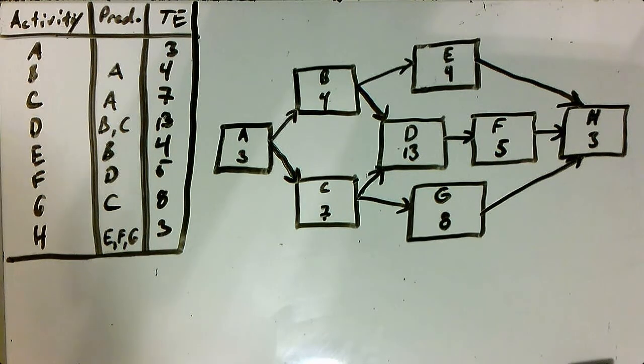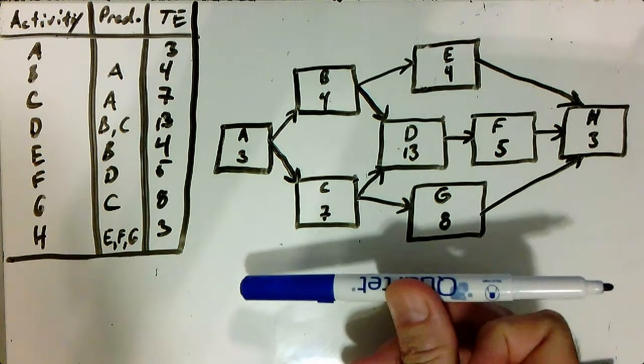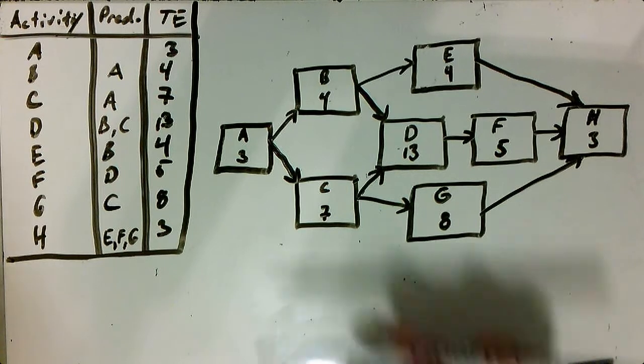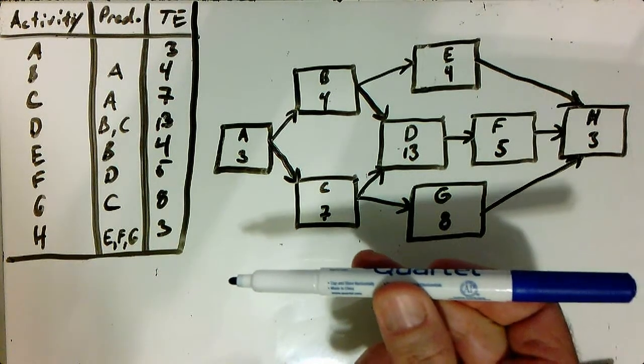So something to keep in mind is we're going to do something called a forward path, which is where we're going to analyze the network in this direction, toward the point. And then we're going to follow it with a backward path, so we're going to analyze the network in this direction.